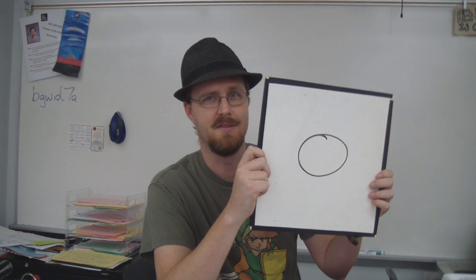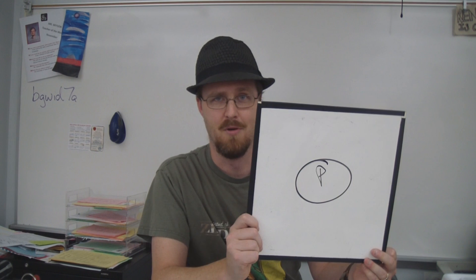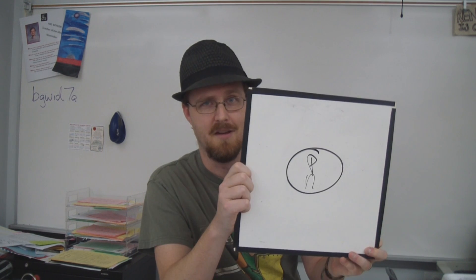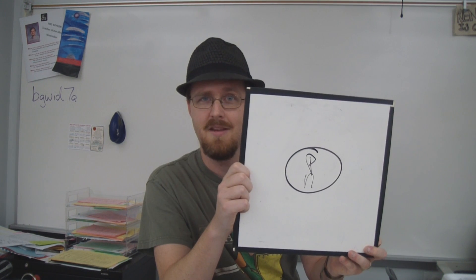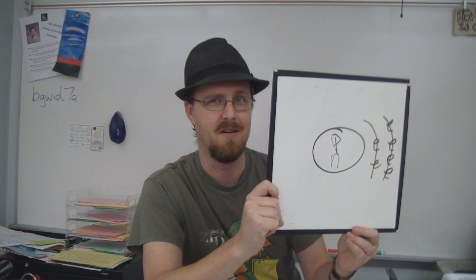So let's do a quick review of the atom. So here, this is our atom. And in the nucleus, we have protons and neutrons. And in the energy levels, we have electrons.